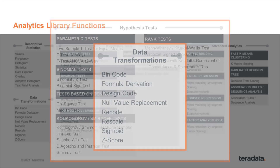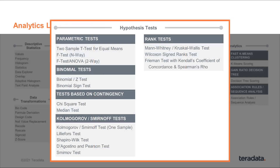From the hypothesis test family, we have parametric tests such as t-tests and f-tests. We have binomial tests. We have tests based on contingency tables such as chi-square and median. We have a variety of KS or Kolmogorov-Smirnov tests. And finally, we have rank tests.